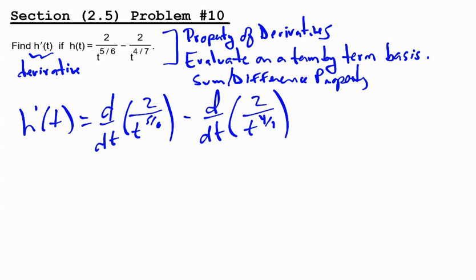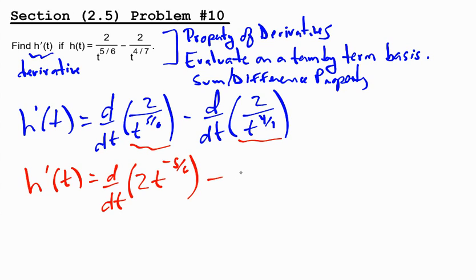Now, the first thing we're going to want to do is rewrite these using negative exponents. So h prime of t is d dt of 2 times t to the negative 5-6 minus d dt of 2 times t to the negative 4-7.